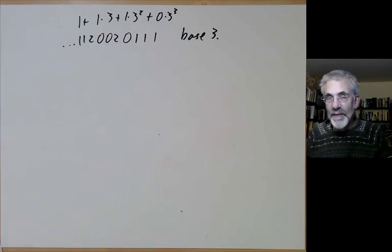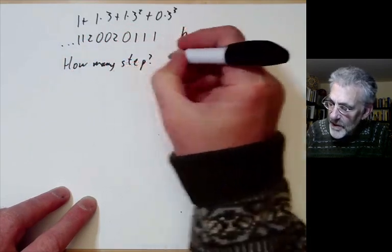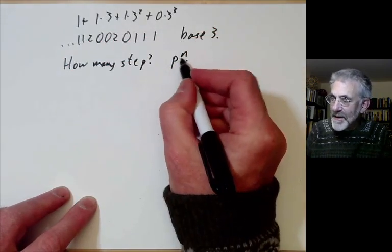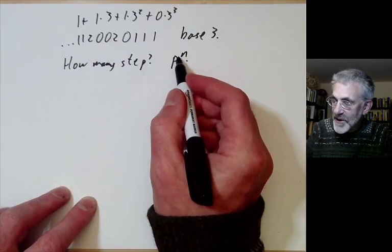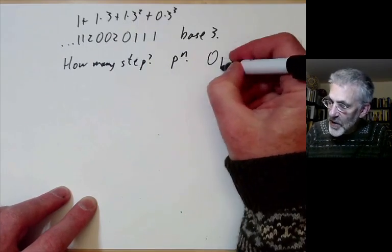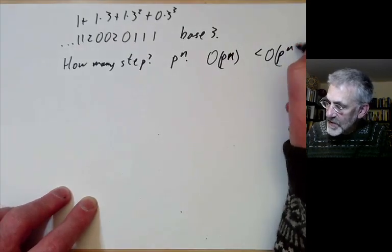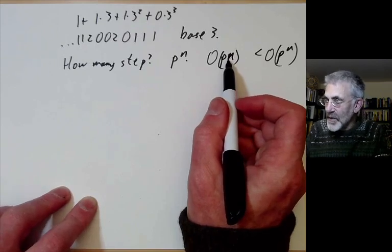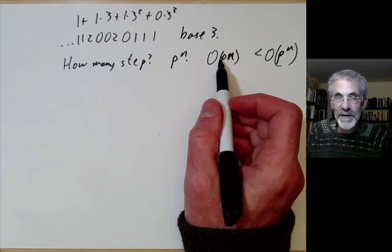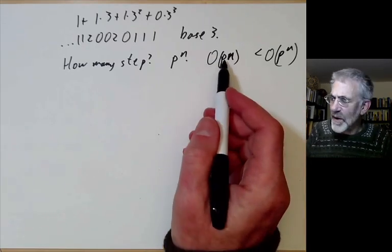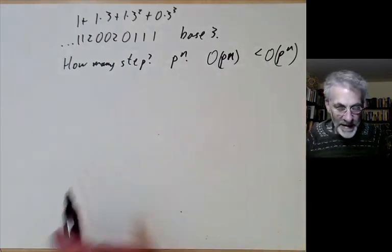That's the slightly better method. To get a solution mod p^n requires n steps, going from x₁ up to xₙ, but at each step we need to search through p possible values. So it takes about O(p·n) steps, which is much less than O(p^n). If p is small, like 3 or 5, this is a perfectly good method, but it won't work well if p is a 10 or 20 digit number.